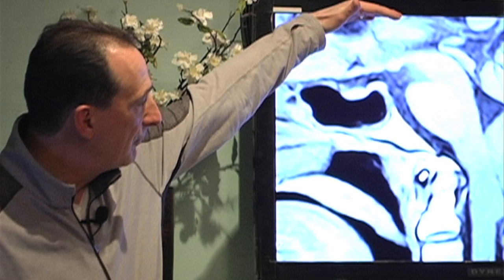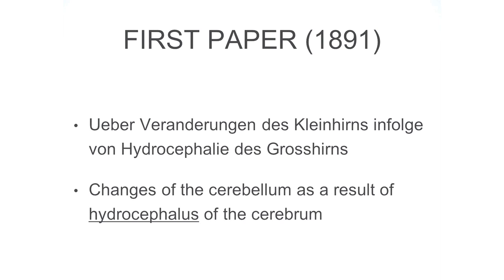The only difference between the Chiari Malformation and that case was that the driving force for the herniation was not a small posterior fossa — something you're going to keep hearing tonight — but the elevated amount of fluid content inside the ventricles pushing the brain outside the limit of the skull. His first paper was titled 'Changes of the cerebellum as a result of hydrocephalus of the cerebrum.'